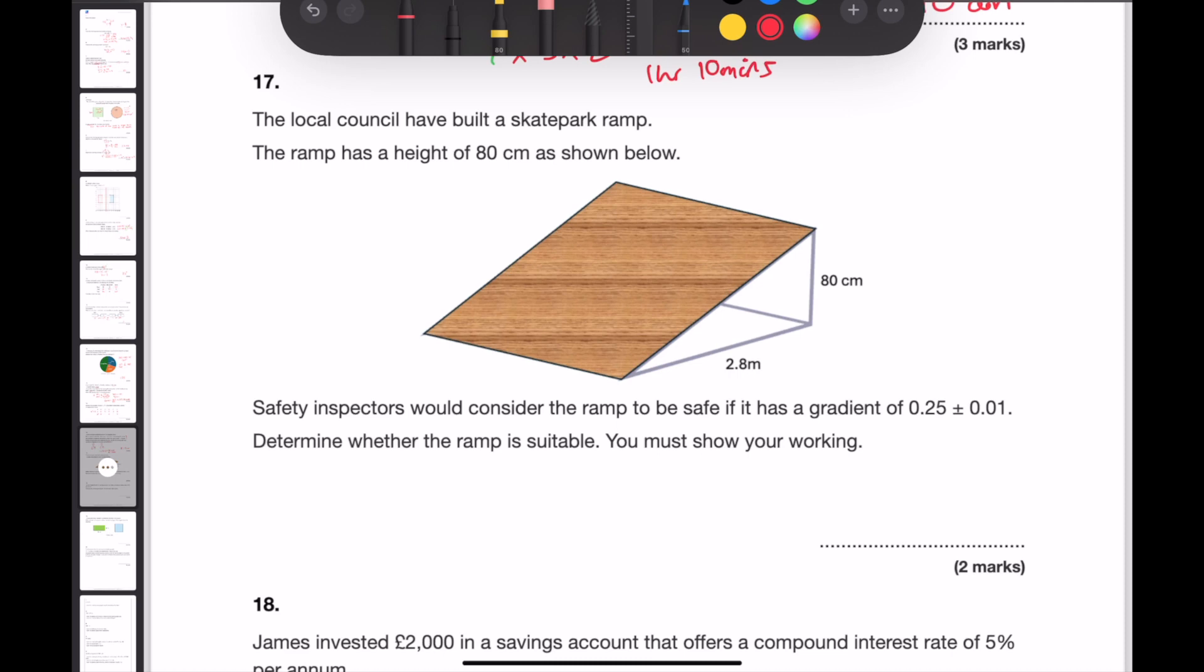Question 17. The local council have built a skate park ramp. The ramp has a height of 80 centimetres as shown below. Safety inspectors would consider the ramp to be safe if it has a gradient of 0.25 plus or minus 0.01. To determine whether the ramp is suitable, you must show your working. In order to calculate the gradient of the ramp, the first thing we need to do is make sure that the units of both numbers are exactly the same. 2.8 metres is 280 centimetres.